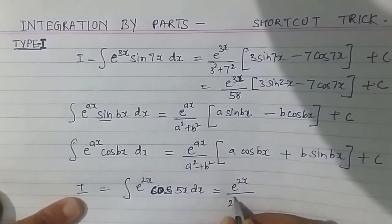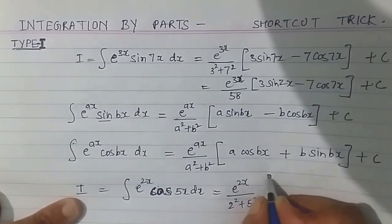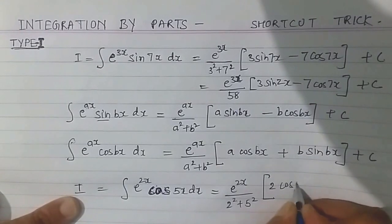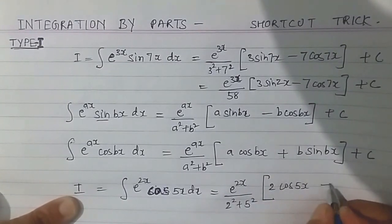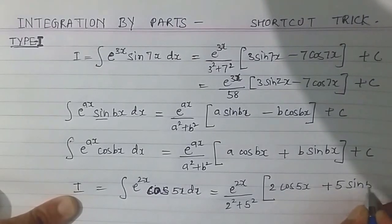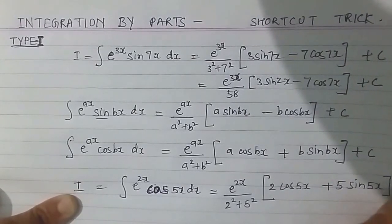For this my answer will be e raised to the power 2x divided by 2 squared plus 5 squared, and here this will be 2 cos 5x plus 5 sin 5x plus c.